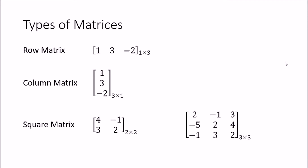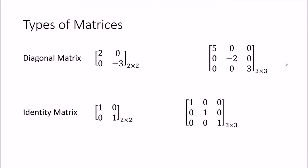Next we look at a subset of the square matrix: the diagonal matrix. A diagonal matrix is a square matrix where values appear only along the principal diagonal. In this 2 by 2 example and in this 3 by 3 example, the values are only along the principal diagonal — the rest of the values are all zero.